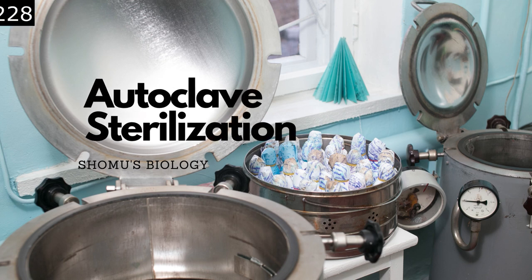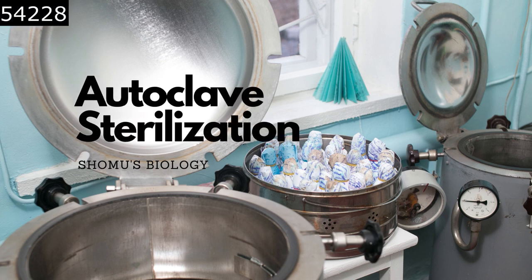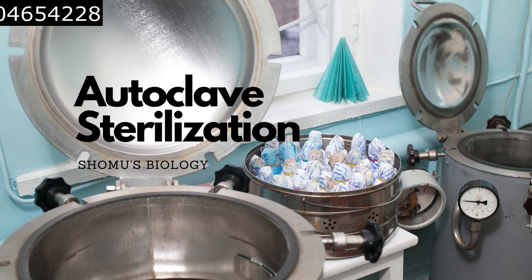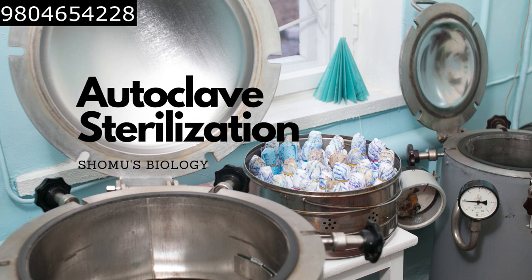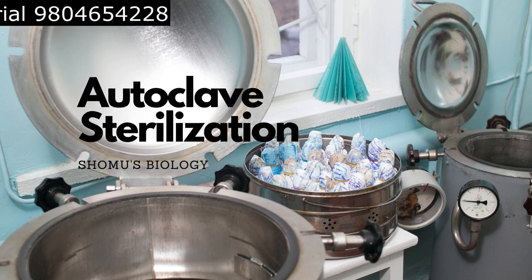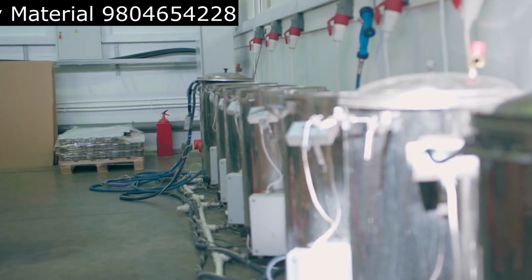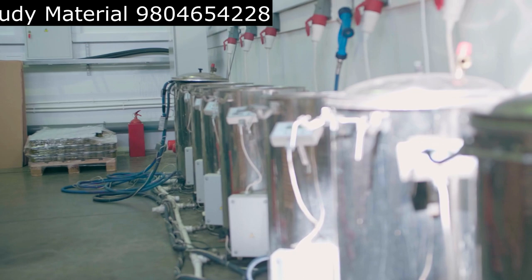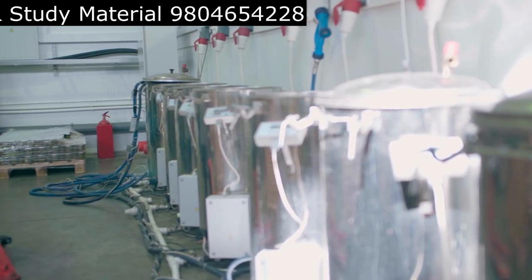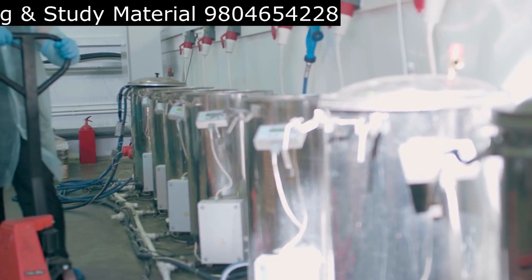Hi there, in this video we are going to talk about autoclave sterilization, a process used to sterilize various medical and laboratory equipment. Autoclaves use steam under high pressure to kill microorganisms, making them a very reliable and effective method of sterilization. In this video we'll be discussing the step-by-step process of autoclave sterilization, so let's begin.